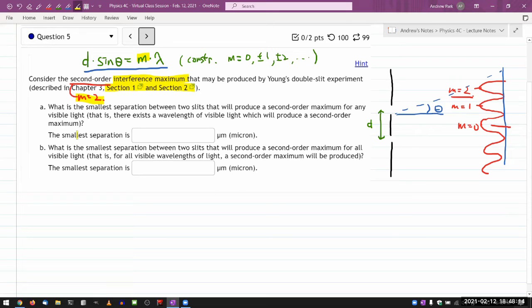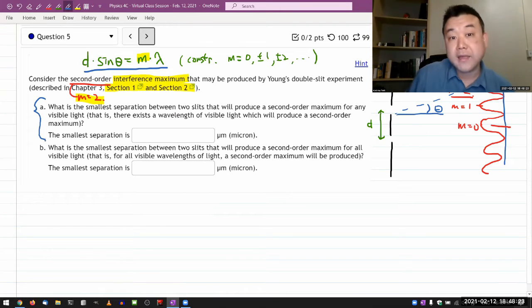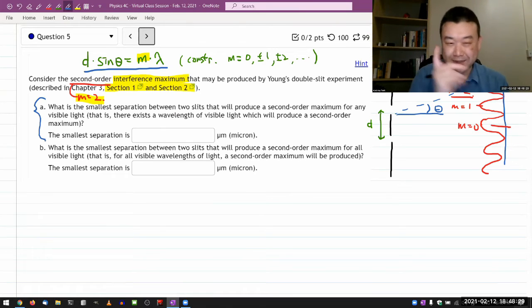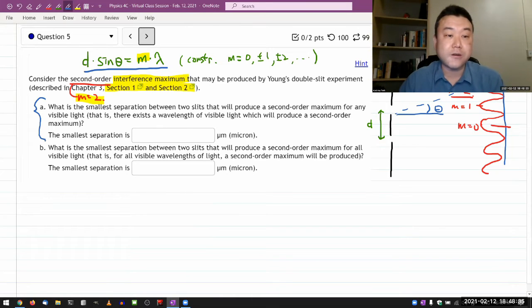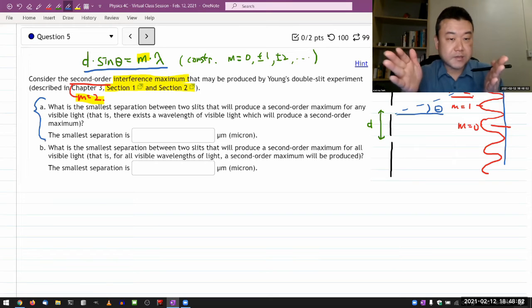If this question is giving you some pause, I think it's referring to a situation that is relatively rare, especially for double slit interference. This is something you can actually see when we deal with the diffraction grating. You could have separation between the slits that's so small that the only interference maxima you see are the central maximum, the first order, and then if the separation is small enough that you wouldn't see second order at all.